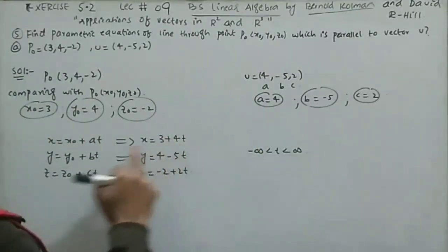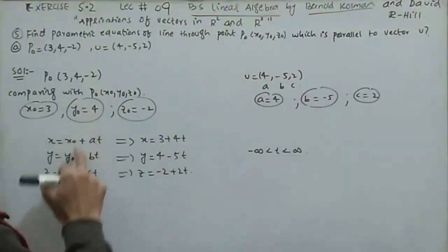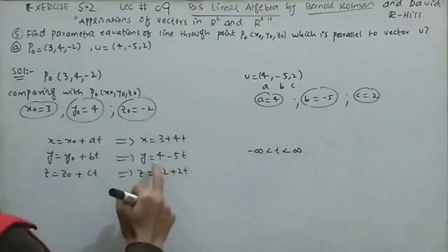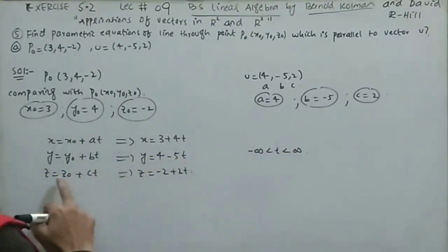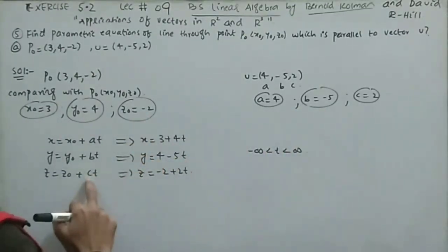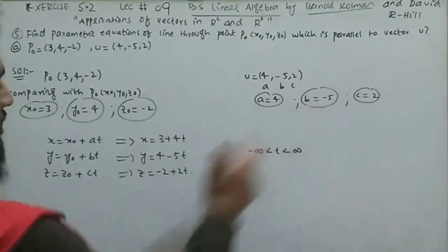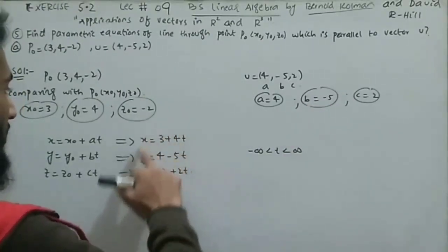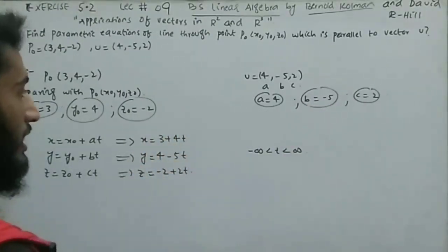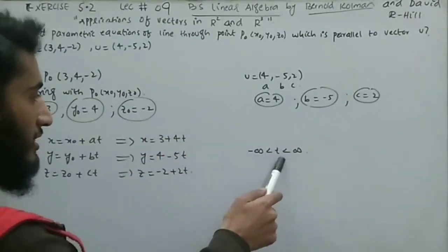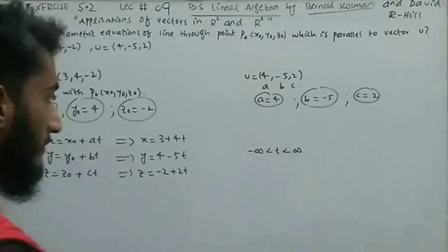Completing the parametric equations: x = 3 + 4t, y = 4 − 5t, z = −2 + 2t, where −∞ < t < ∞. These are the required parametric equations of the line through P0 parallel to U.